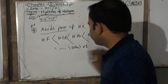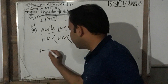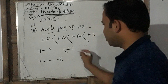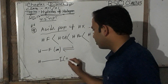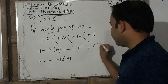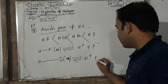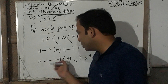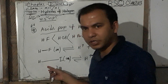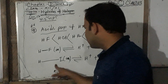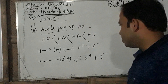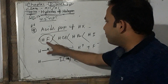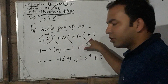The reason for the acidic strength order: in aqueous solution, HF and HI both dissociate — HF → H⁺ + F⁻, and HI → H⁺ + I⁻. The bond length of HF is much shorter than HI, so HF has higher bond dissociation energy and dissociates less easily. HI has weaker bond dissociation, so it ionizes more readily, making it a stronger acid. This explains why HI is the strongest acid and HF is the weakest.